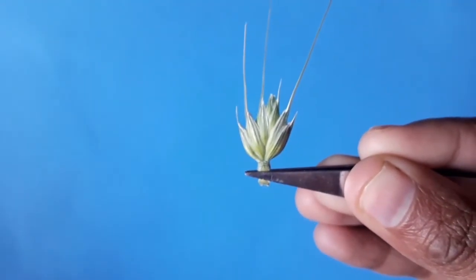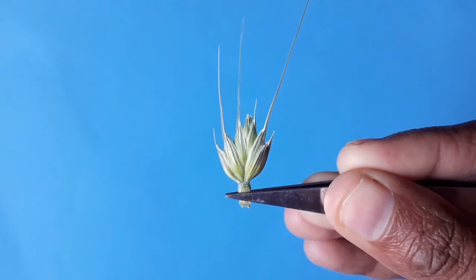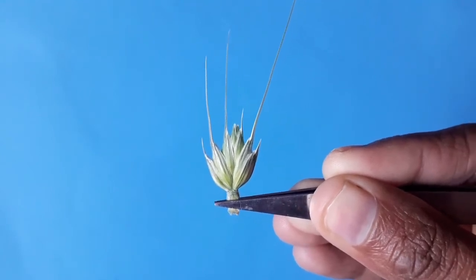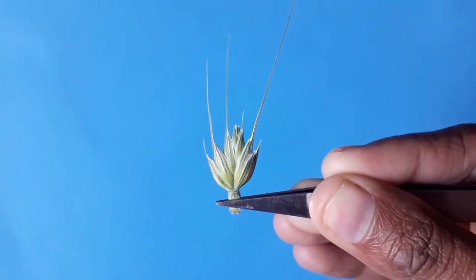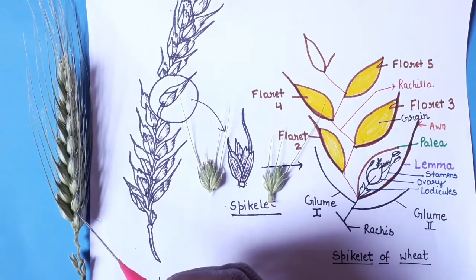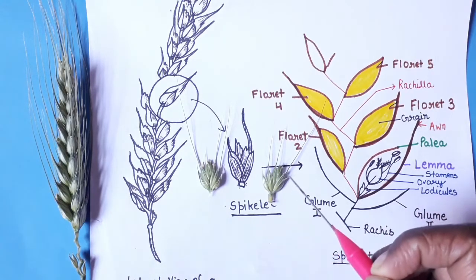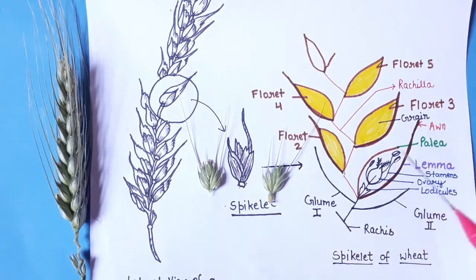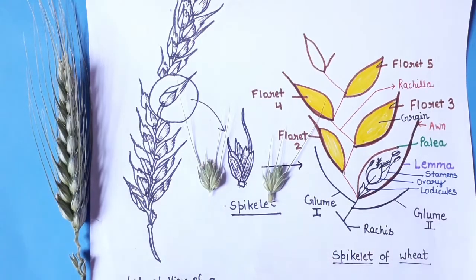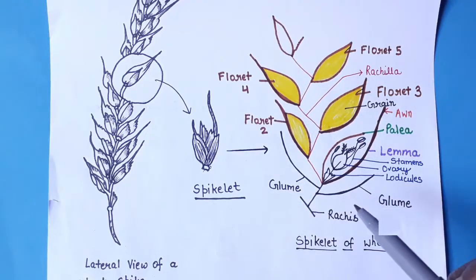We have now removed a single spikelet from the spike, and this is what it looks like. We are going to dissect this spikelet and discuss its structure. We have detached a spikelet from the spike of Triticum aestivum, and after opening it we will study all the floral structures inside. Let's first discuss the diagrammatic portion of the wheat spikelet.